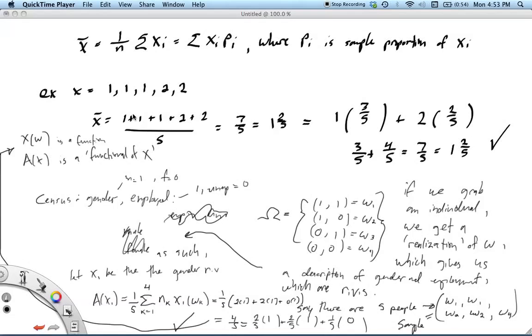Whittle's probability via expectation book. The first thing he wants you to see, which is pretty easy, is that the sample mean, as it's usually defined, can equivalently be written as the sum of the x_i times the proportion in the sample.